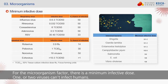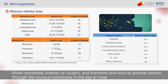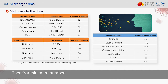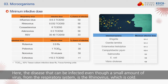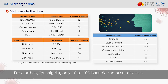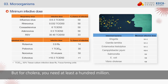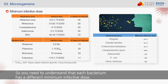There is also a minimum infective dose. One or two viruses can't infect humans — there is a minimum number required. This is called the minimum infectious dose. The rhinovirus, which causes the common cold, can be infectious even through a small amount of virus from the respiratory system. For Shigella diarrhea, only 10 to 100 bacteria can cause disease, but for cholera, you need at least 100 million. Each bacterium has a different minimum infective dose.